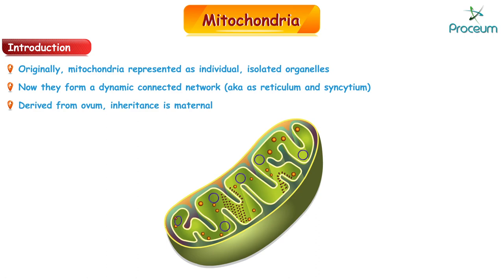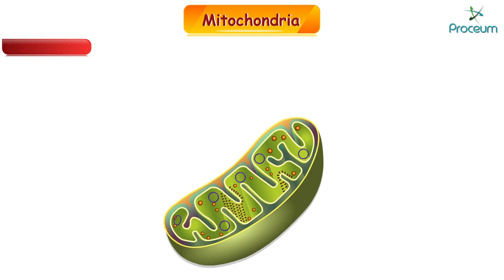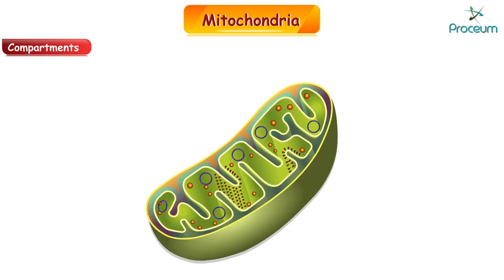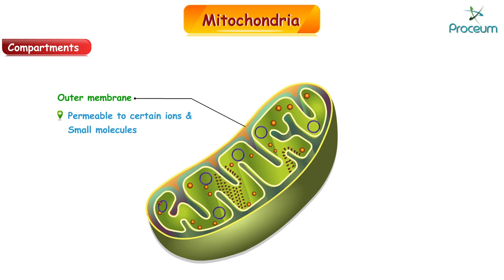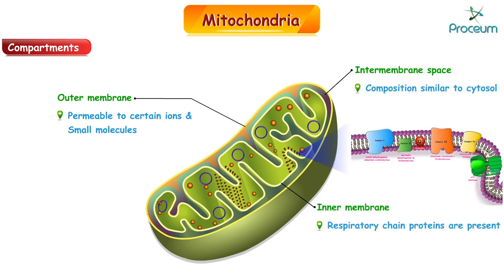Now let's look at some mitochondrial compartments. Mitochondria have four main compartments. The outer membrane, which is permeable to certain ions and small molecules. The intermembrane space, which has a composition similar to that of the cytosol. The inner membrane, in which respiratory chain proteins are found. The inner membrane is folded into multiple cristae, allowing for large surface areas.